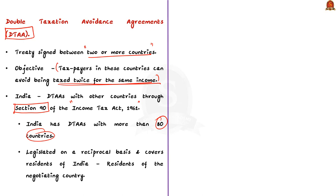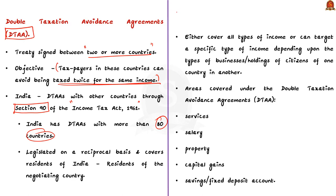An important point is that an individual or corporation not a resident of India or the country with which India signed DTAA cannot claim benefits under the DTAA. DTAA can either cover all types of income or it can target a specific type of income depending upon the types of businesses or holdings. The categories generally covered under a Double Taxation Avoidance Agreement are services, salary, property, capital gains, and savings or fixed deposit accounts.